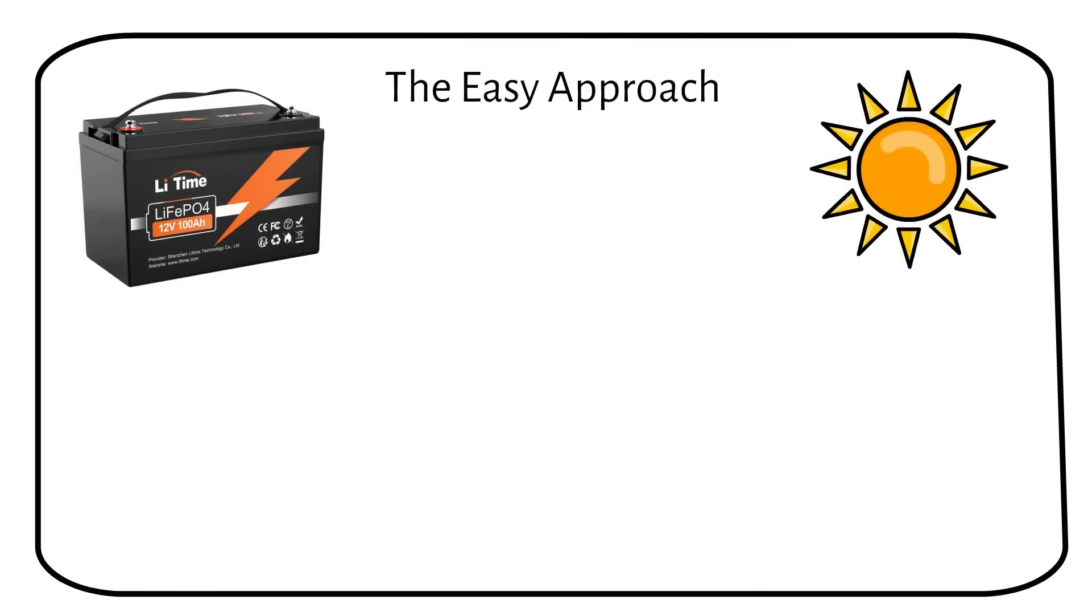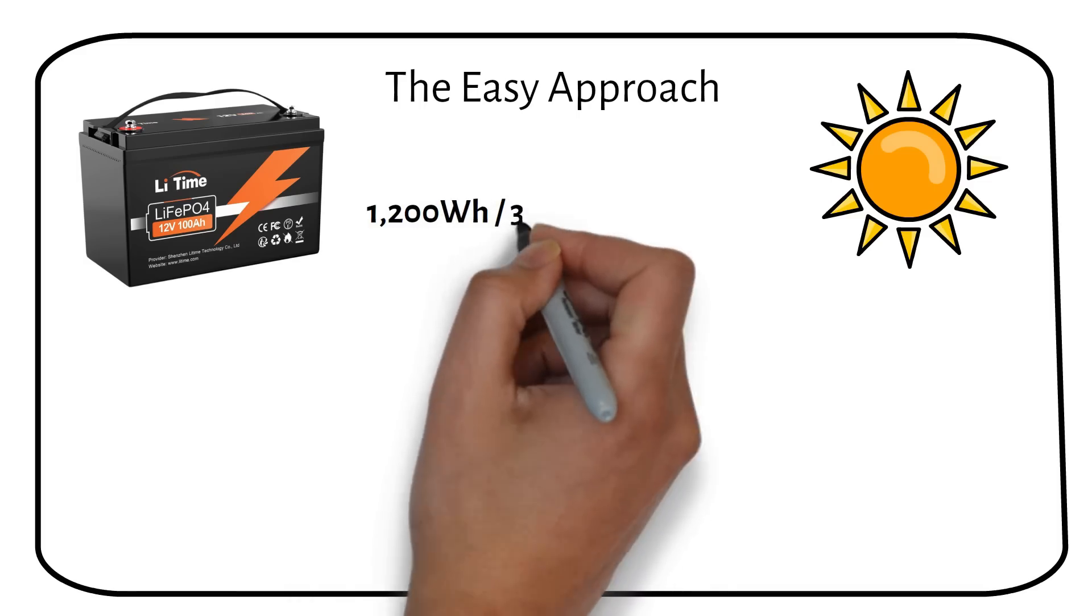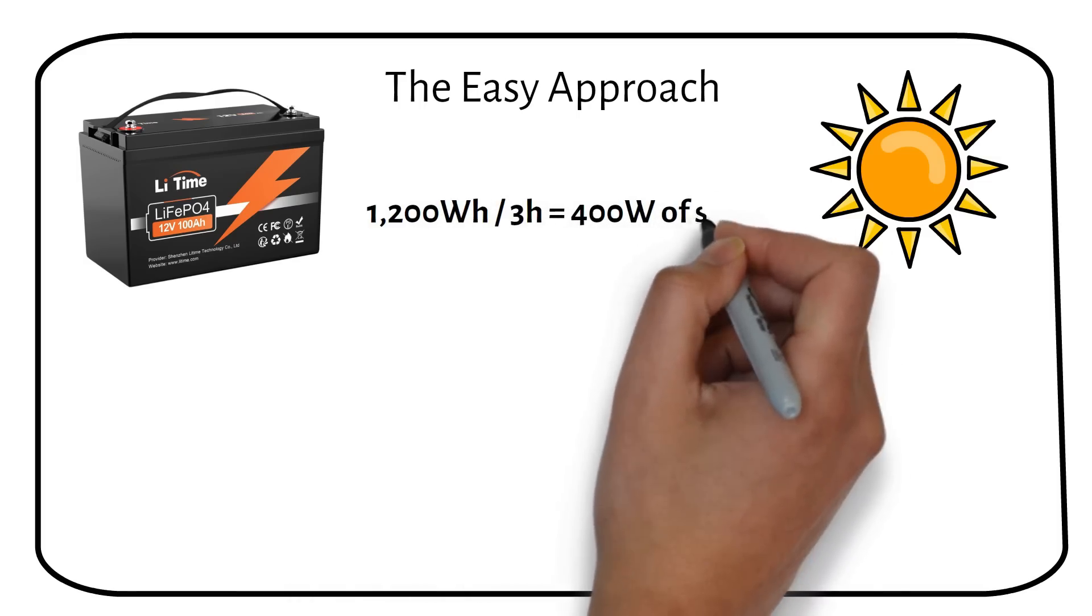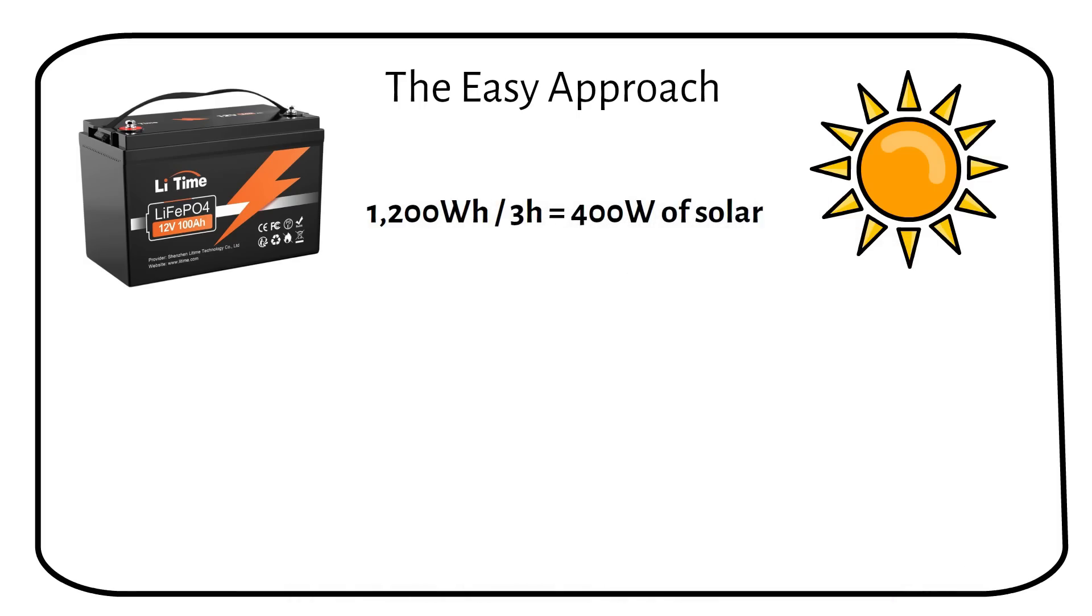First let me explain the easy approach for people who don't have enough time to watch the whole video. A 1200 watt hour battery with three daily sun hours requires 400 watts of solar panels. As easy as it seems, there's more to it than meets the eye.